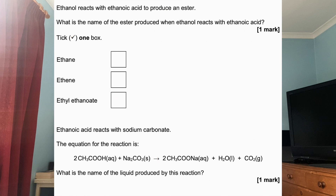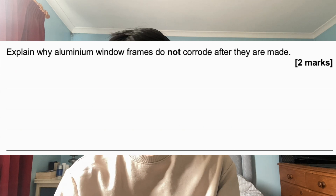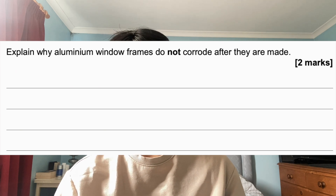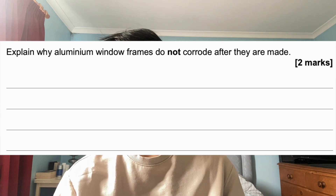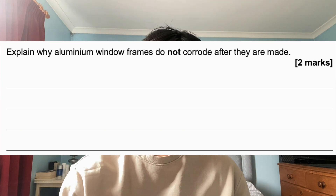There's also a part b to question four: ethanoic acid reacts with sodium carbonate — what is the name of the liquid produced by this reaction? The final question is a two-mark question: explain why aluminium window frames do not corrode after they are made. Pause the video and answer the final question.